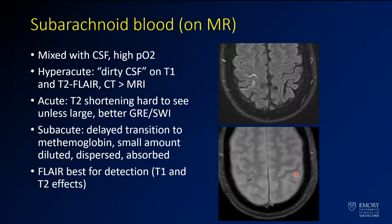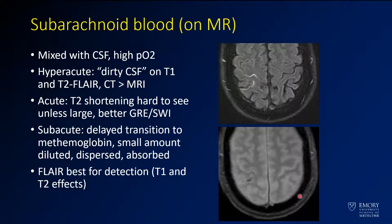On MRI, subarachnoid hemorrhage can have a somewhat different appearance. What you'll most often see is a little bit of dirty CSF. Here on a FLAIR image, you're seeing T2 hyperintensity in the sulcus — you're not getting completely suppressed CSF signal. On gradient or susceptibility imaging, you'll have dark linear areas of susceptibility in the sulci themselves. In general, FLAIR and susceptibility imaging are the best sequences for detecting subarachnoid hemorrhage.